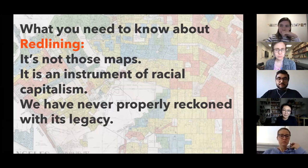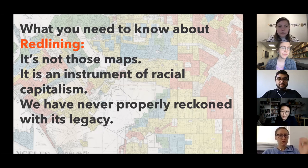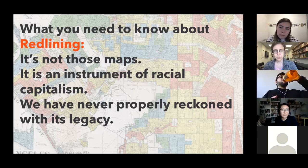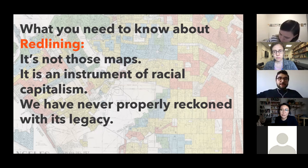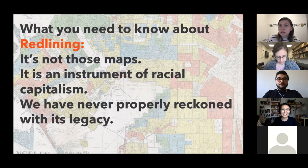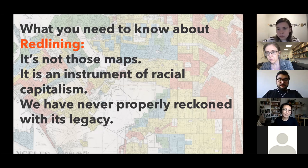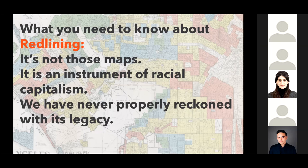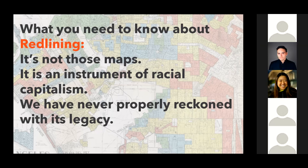This talk examines the decade-long use of redlining by federal institutions in the 20th century as an instrument to systematically and explicitly disinvest from urban neighborhoods in the United States, constraining mobility opportunities, perpetuating physical, social, and economic isolation and stratification, and enforcing the racialized residential stratification that continues to shape social inequalities in cities presently. I have three big messages that are maybe not the typical narrative you might hear about redlining. First, it's not these maps or those maps. Redlining is an instrument of racial capitalism. And third, we've never properly reckoned with its legacy.